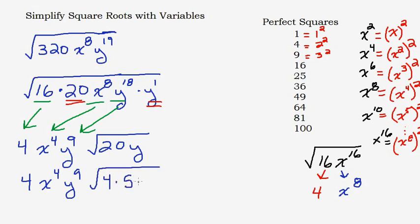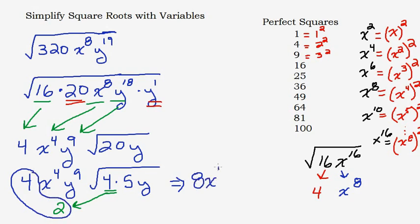The perfect squares are 16, x to the eighth, and y to the eighteenth. Taking their square roots: square root of 16 is 4, square root of x to the eighth is x to the fourth (divide exponent by 2), square root of y to the eighteenth is y to the ninth (divide 18 by 2). What remains inside is 20 and y. But we're not done — 20 has a perfect square factor of 4, so rewrite 20 as 4 times 5.